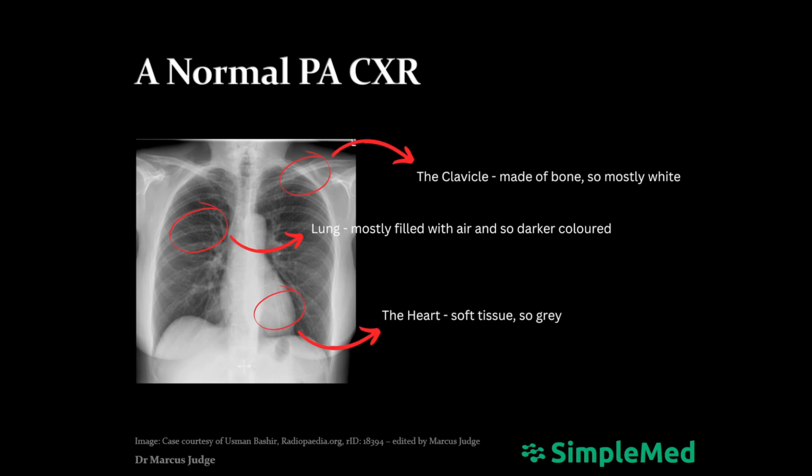The clavicle, made of bone, appears mostly white. The heart, made of tissue, is quite thick and so despite the tissue being less radiologically dense, it also appears quite grey-white. The lung area, which is mostly filled with air, appears darker. Note the presence of white streaks across the lungs — these are lung markings from the lung tissue and are entirely normal.